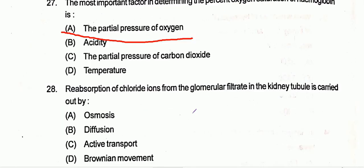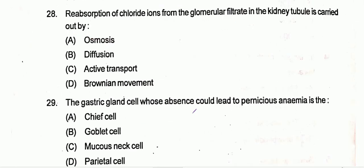Question twenty-eight: reabsorption of chloride ions from the glomerular filtrate in kidney tubules is carried out by diffusion. By means of diffusion, reabsorption of chloride ions occurs, so option B will be the correct one.